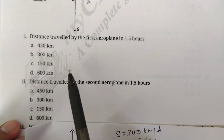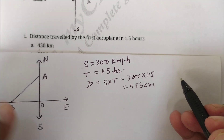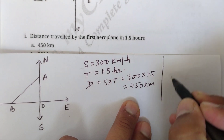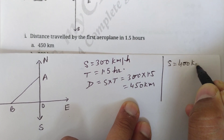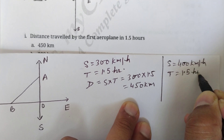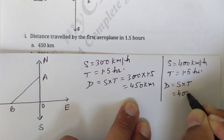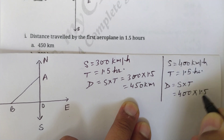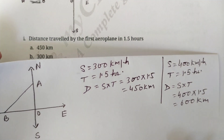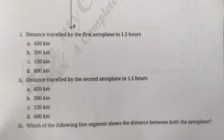The second question asks for the distance traveled by the second aeroplane in 1.5 hours. The speed of the second aeroplane is 400 km/h and the time is 1.5 hours. Distance = speed × time, so 400 × 1.5 = 600 kilometers. So 600 km is the correct answer for the second question.